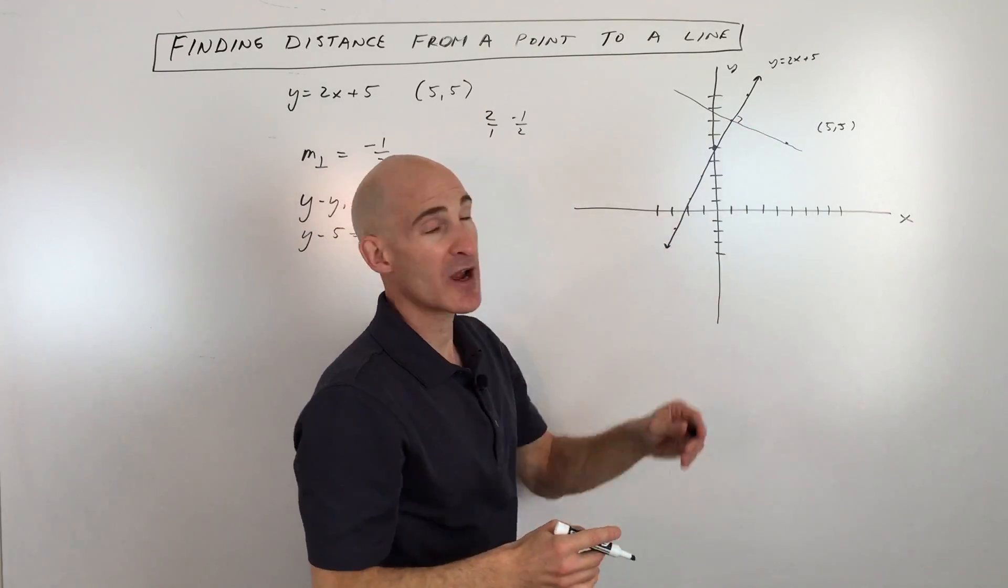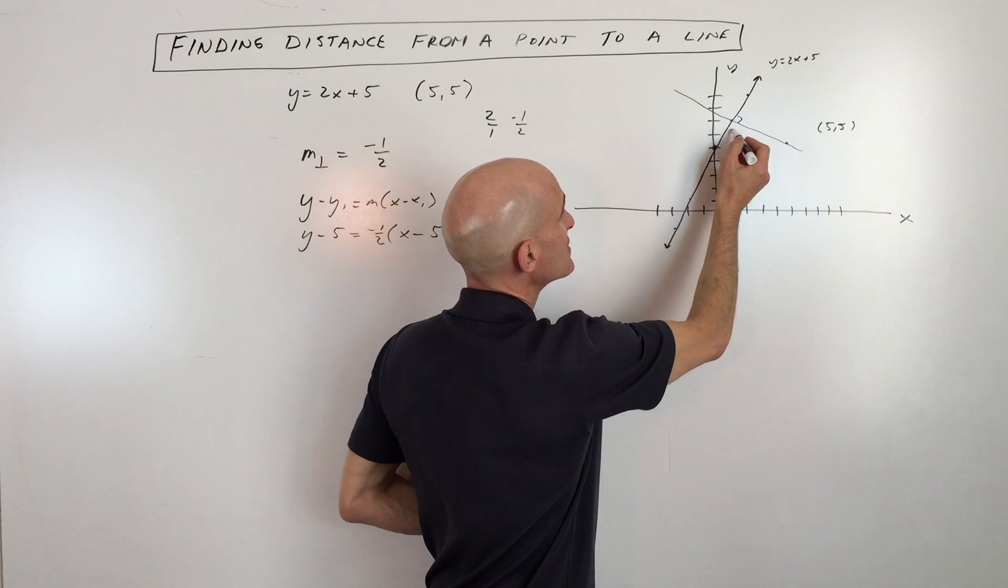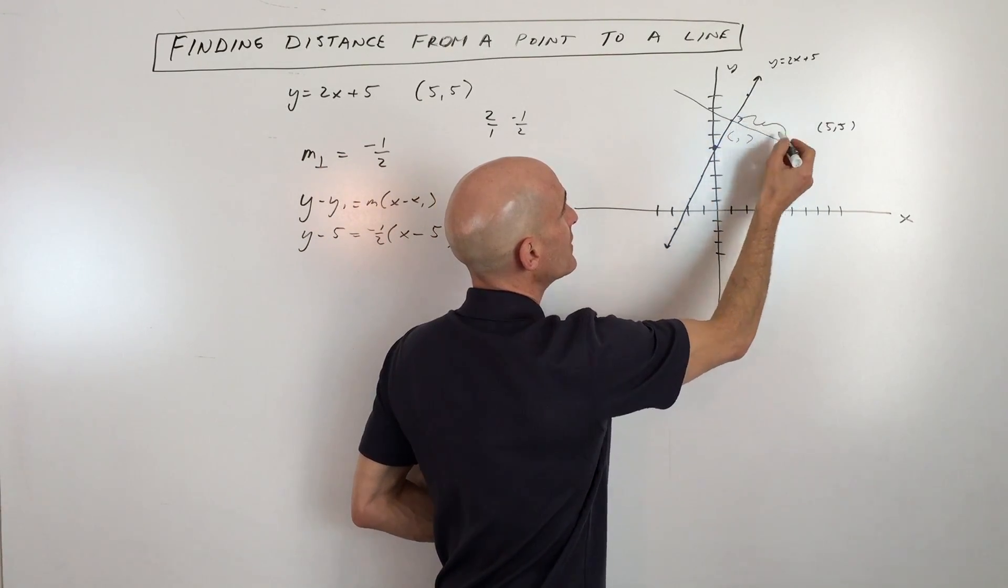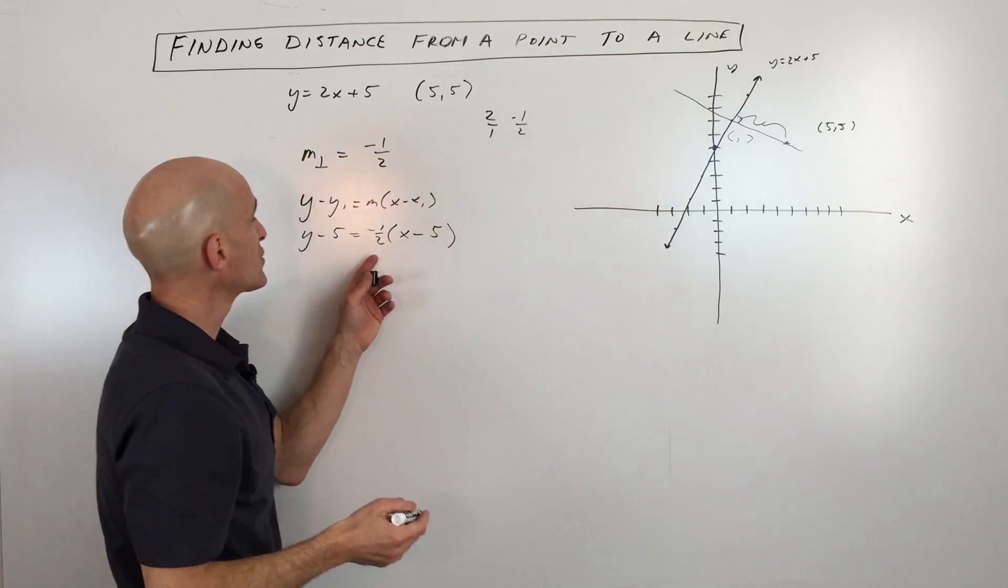But now what we're going to do is try to find out where these two lines cross. We're going to find the coordinates of this point right here. Then what we can do is use the distance formula to find that distance. So let's go ahead and do that.